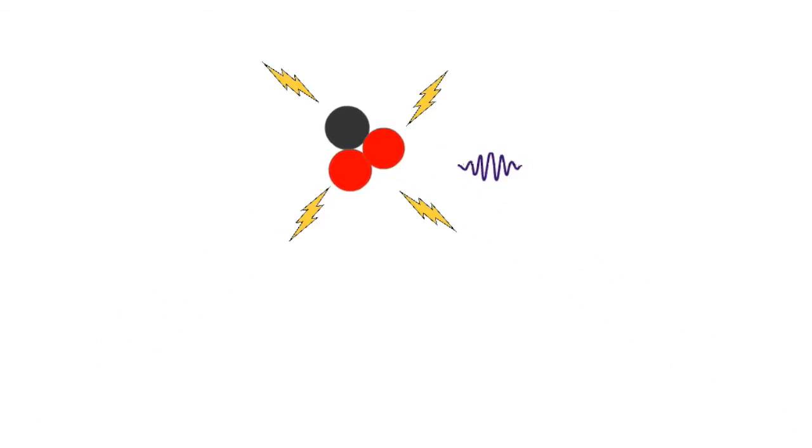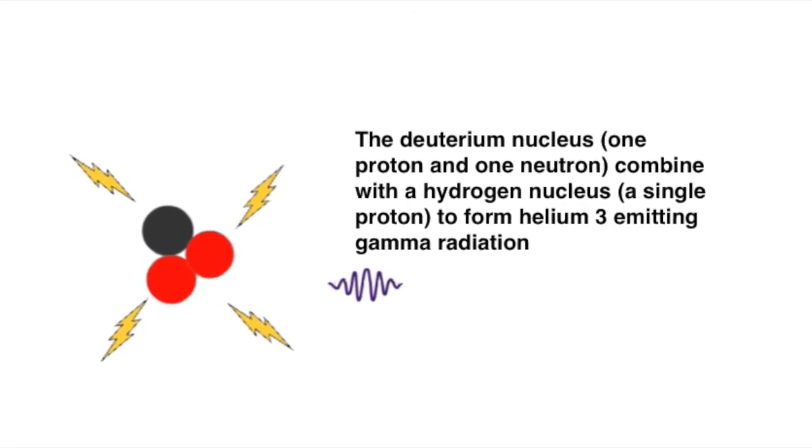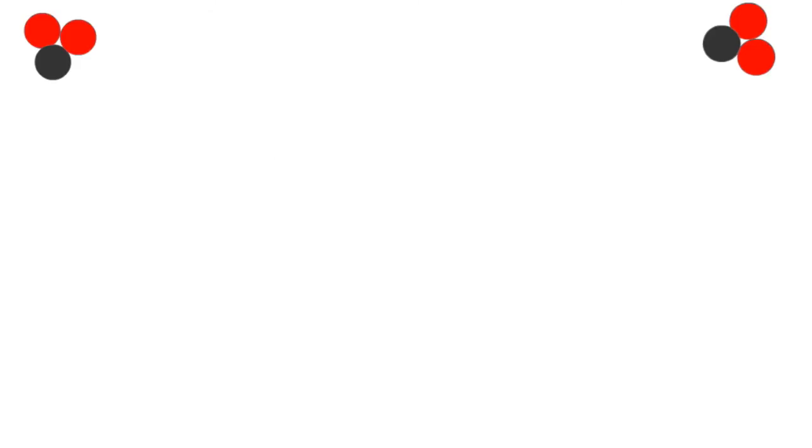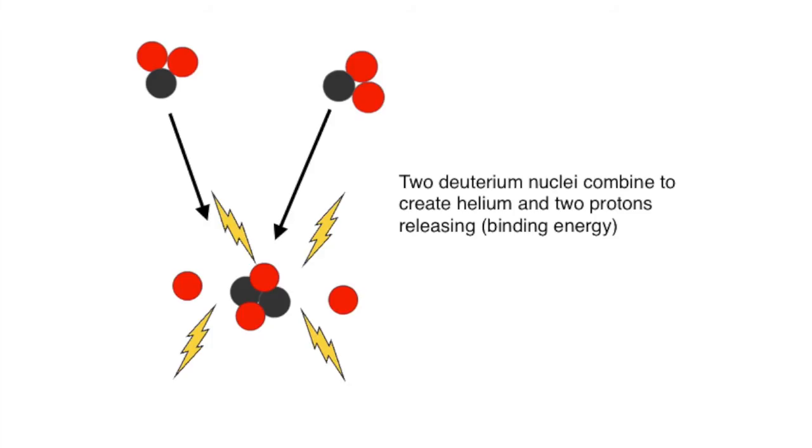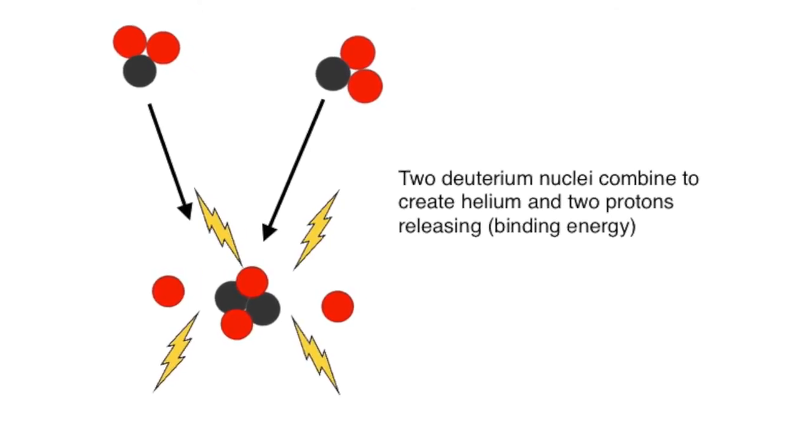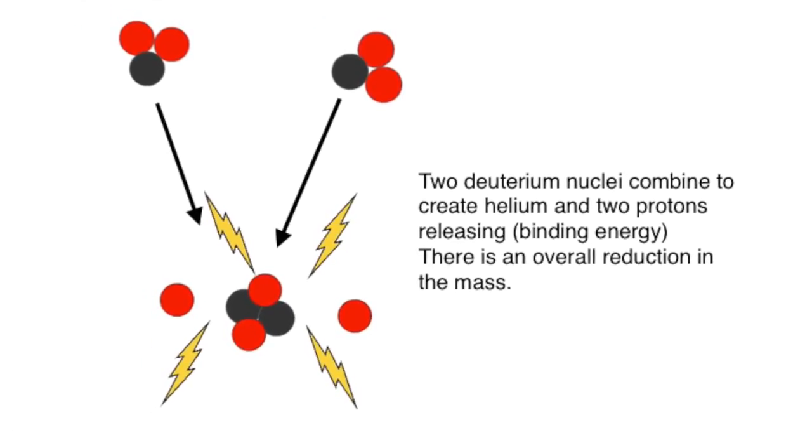In the third stage, two helium-3 nuclei fuse. And in their collision, they produce helium-4 and two free protons. Once more, the combination has a higher binding energy per nucleon, a reduction in mass, and a production of energy.